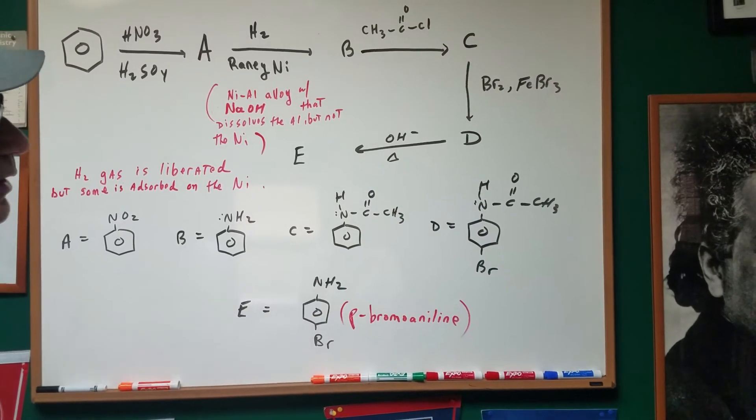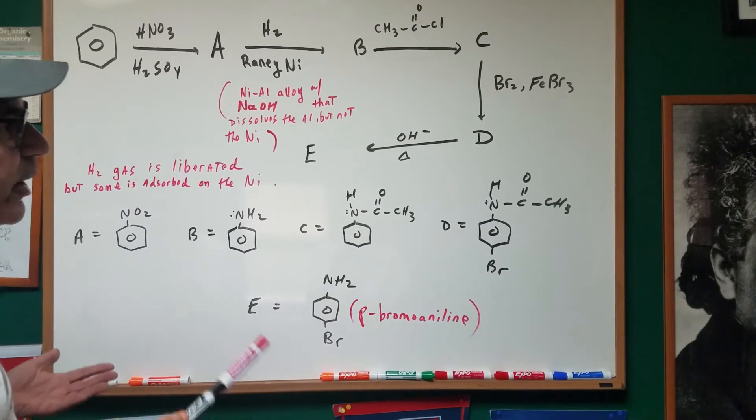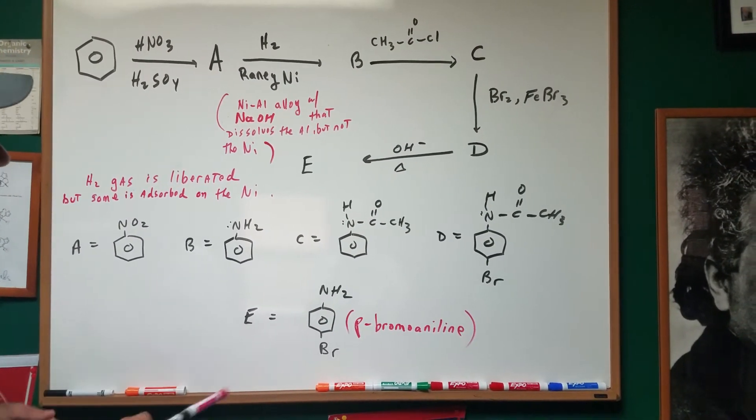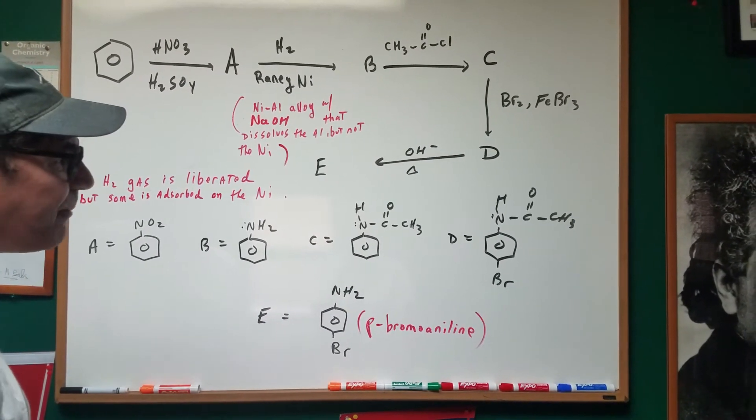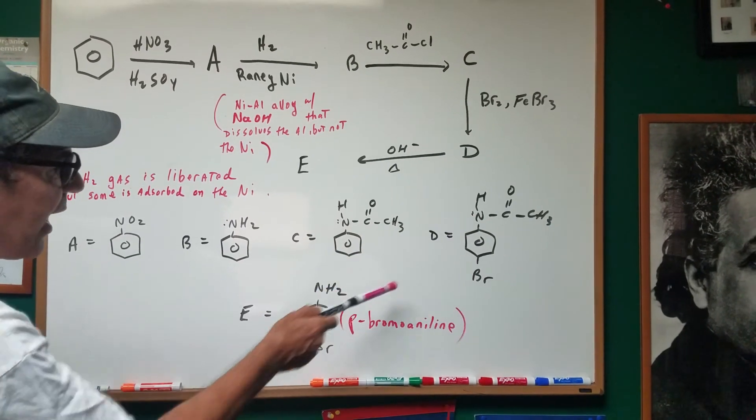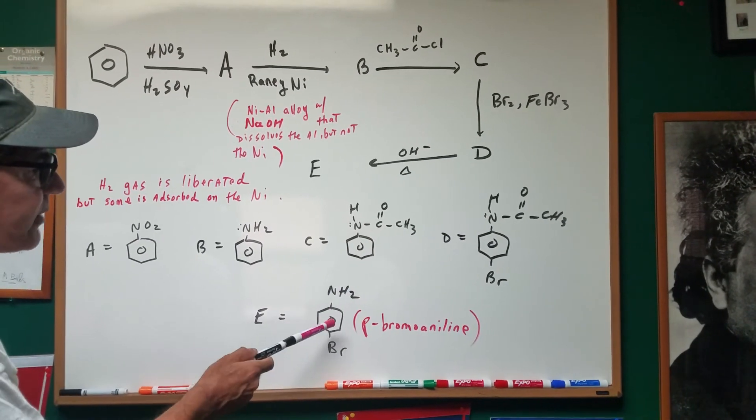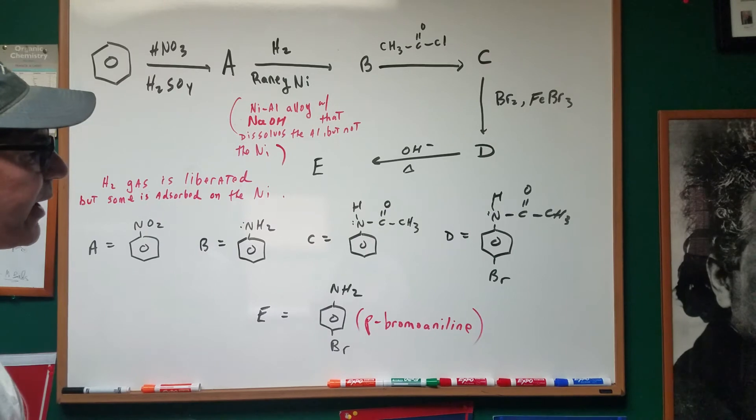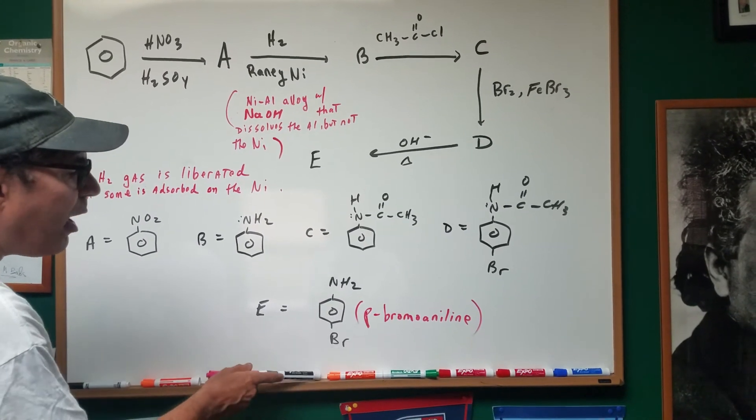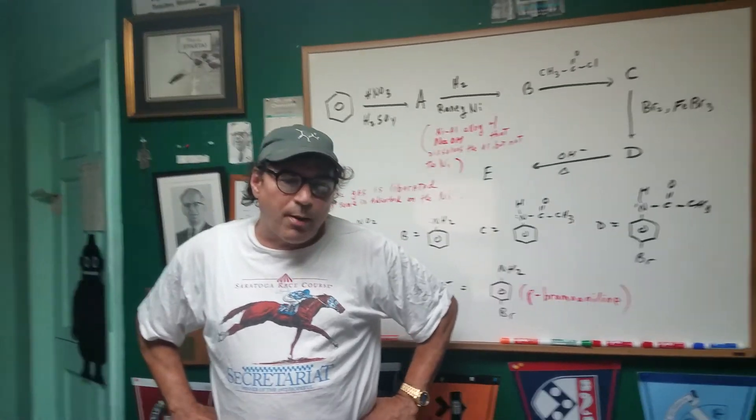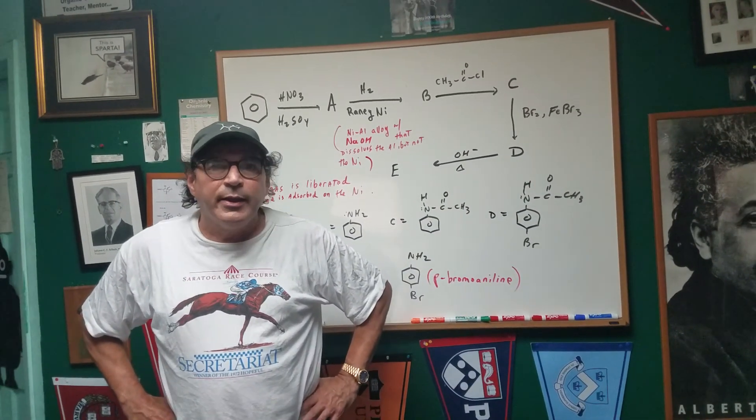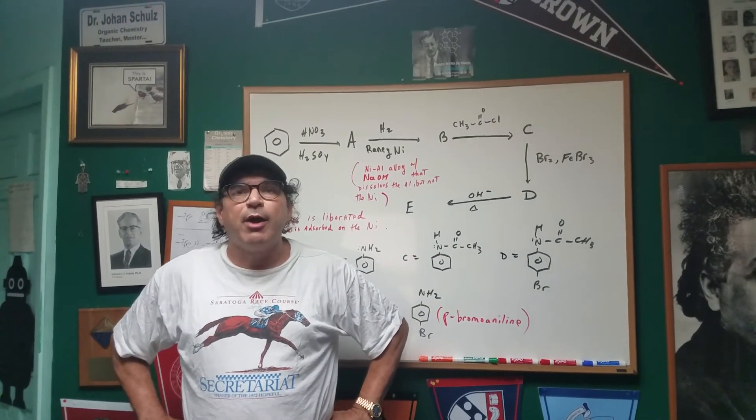Notice, I've acetylated it in order to protect the group. I've protected the NH2 group. It's so reactive, we have to deactivate it a bit. After I protect it, I hydrolyzed it. It breaks off the protecting group, and we get the final product, parabromoaniline. And there you have it. That's the way I would go about using rainy nickel in a synthesis on aromatic chemistry.